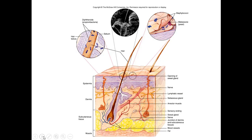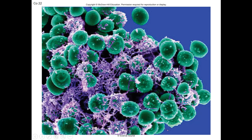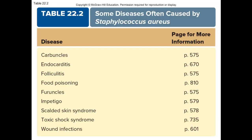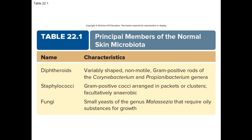Here you can see up close the hair follicle with diphtheroids such as Propionibacterium present in the hair follicle shaft as well as some of the oil glands. You'll also see Staphylococci present on some of the sheets of the skin, as well as Malassezia, which is a yeast. Aside from Staphylococci and diphtheroids, we also have fungal organisms that are lipophilic — fat-loving organisms. They're tiny yeasts, and most of them are harmless. Malassezia furfur can cause an unusual phenomenon called tinea versicolor.